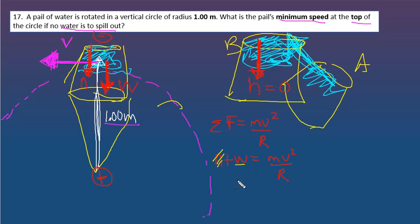And then notice it didn't give you the weight or the mass of the bucket of the water because it's going to cancel. So weight equals mg equals mv squared over r. Mass cancels. And then the minimum speed is the square root of gr.